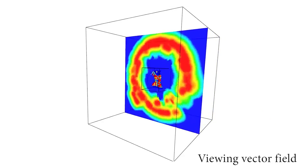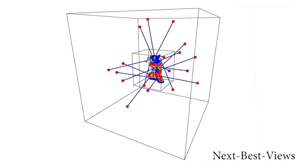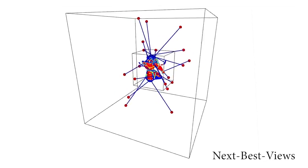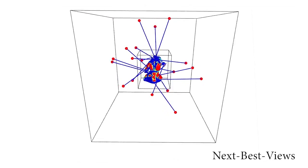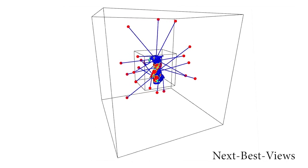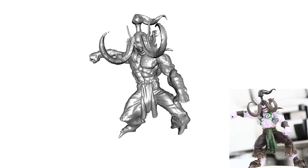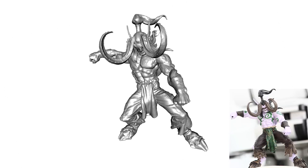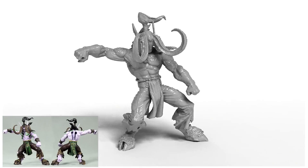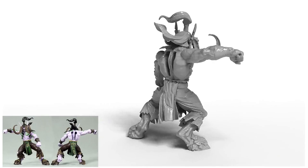We then build an ambient viewing field which suggests a set of next best views with 5 degrees of freedom for covering low confidence areas of the isosurface. We show that by positioning the scanner at the suggested viewpoints, the surface of the scanned object is progressively captured, recovering all details of the real object.